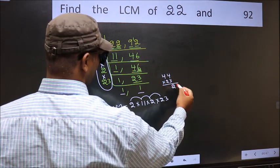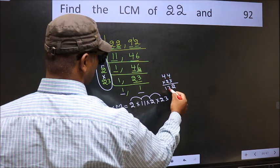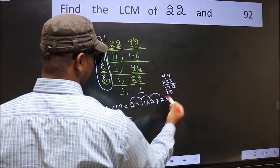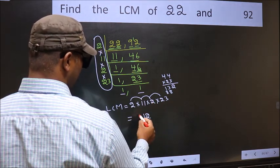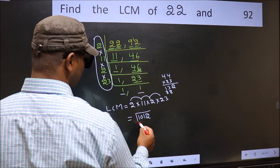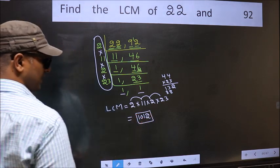3 fours 12, carry 1. 3 fours 12 plus 1 is 13. 2 fours 8, 2 fours 8. Now it is 2, 1, 8, 9, 10. So 1012 is our LCM.